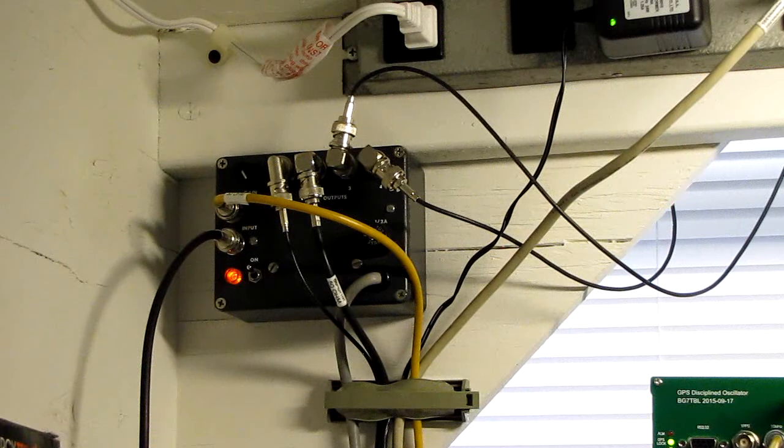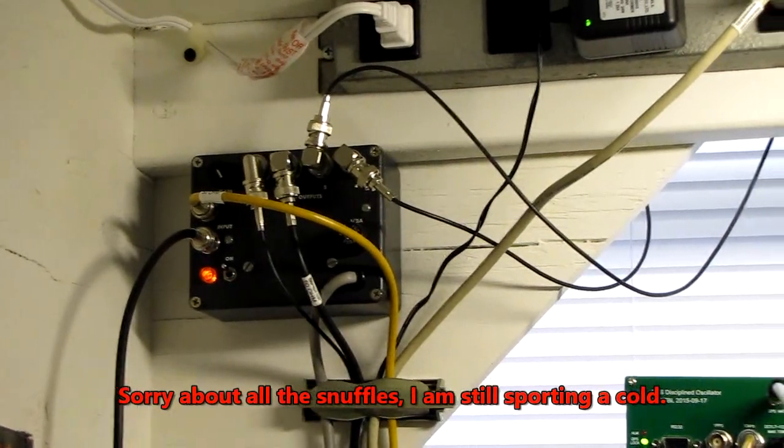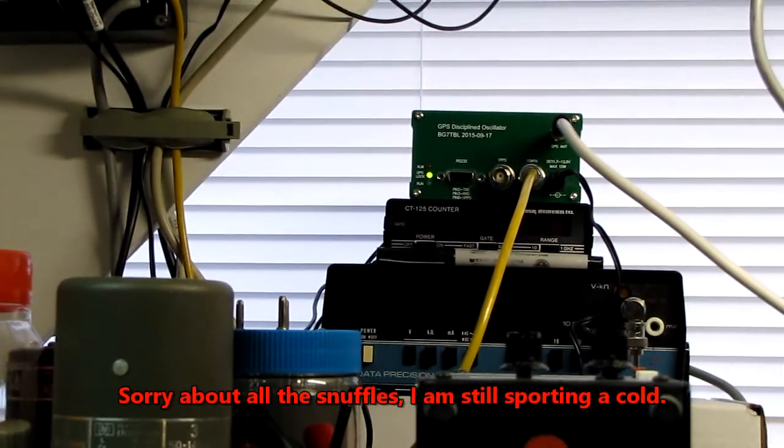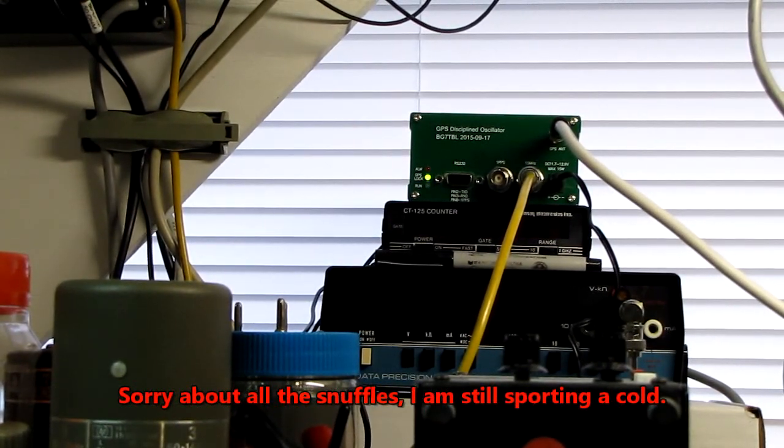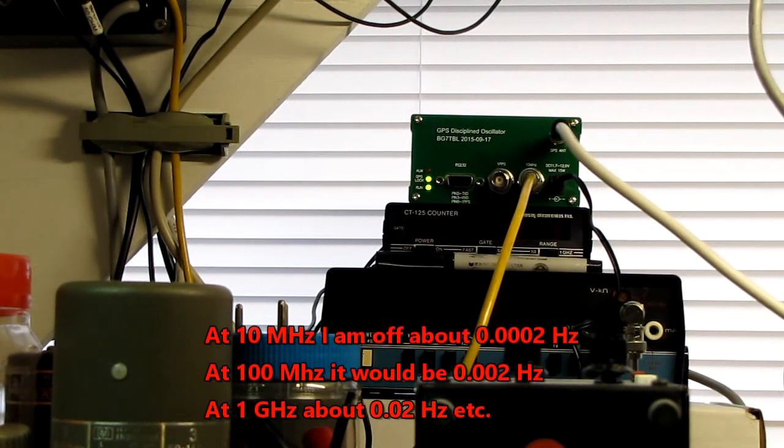Nothing you run on this is going to care. You're not running laboratory precision standard here. You just want a decent time base. Now comparing this thing to two Agilent GPS DOs, as near as I could figure this thing has about 200 microhertz of error. That's 0.0002, so that's four decimal places out. So at 10 megahertz it's off about 0.0002 hertz.